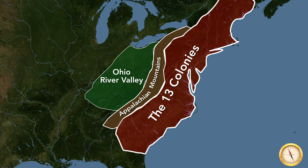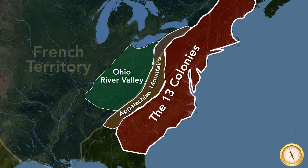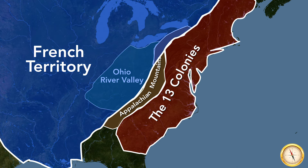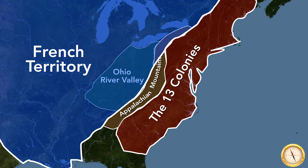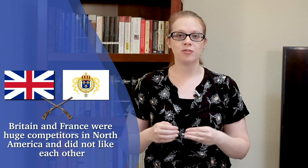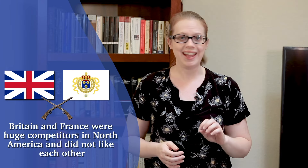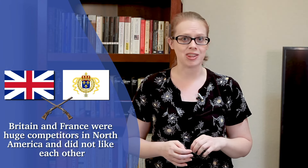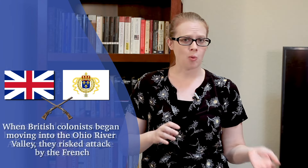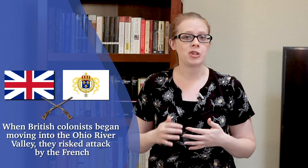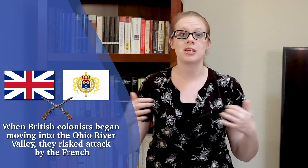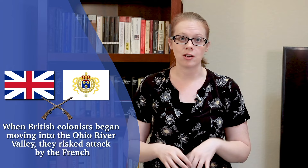Moving into the Ohio River Valley, however, was not without risks. First, it was located in French territory, west of the Appalachian Mountains. Britain and France were huge competitors for territory in North America and they did not like each other. So when British colonists started moving into the Ohio River Valley, which was French territory, they risked getting attacked by the French.